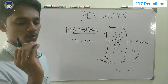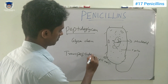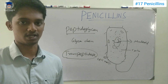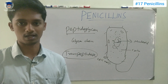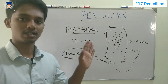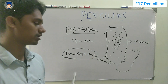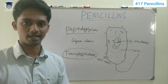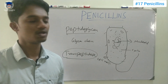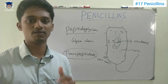To make peptidoglycan, glycan chains are cross-linked. If you want to make a cross-link, for example, there are 100 glycan chains, and these glycan chains are also linked by peptide chains — one glycan chain to another glycan chain — forming the peptidoglycan mesh. This makes the cell very rigid. The enzyme responsible for this cross-linking is called transpeptidase.